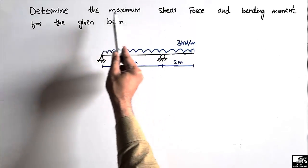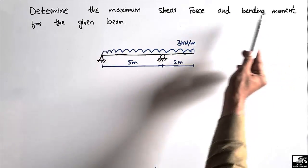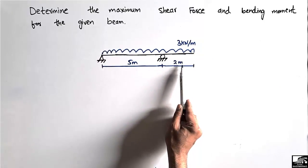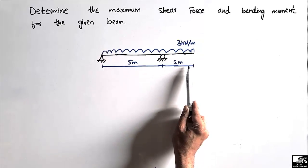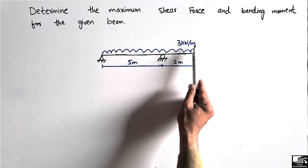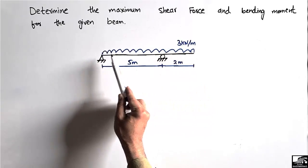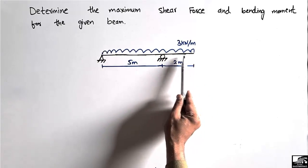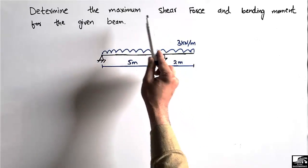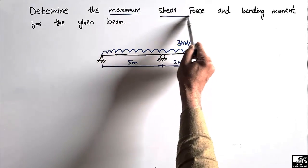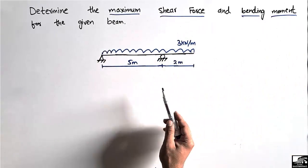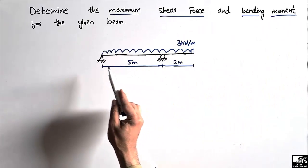The problem states: determine the maximum shear force and bending moment for the given beam. The beam has a total length of 7 meters, with a uniformly distributed load of 3 kN per meter acting over the whole length. We are interested in finding the maximum shear force and maximum bending moment. The first step will be to find the support reactions.